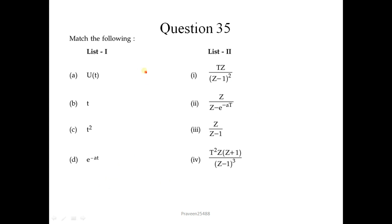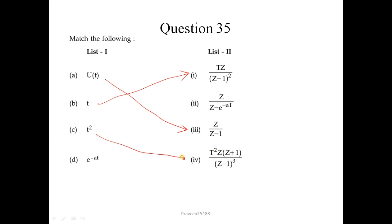Question number 35 - match the following. In list 1, time-domain functions are given, and in list 2 their Z-transforms. The unit step U(n) has Z-transform Z/(Z-1). The ramp function (nT) has Z-transform TZ/(Z-1)². For T²n², the Z-transform is T²·Z(Z+1)/(Z-1)³. For the exponential e^(-aT), the Z-transform is Z/(Z - e^(-aT)). The correct sequence is 3-1-4-2, so option 3 is correct.